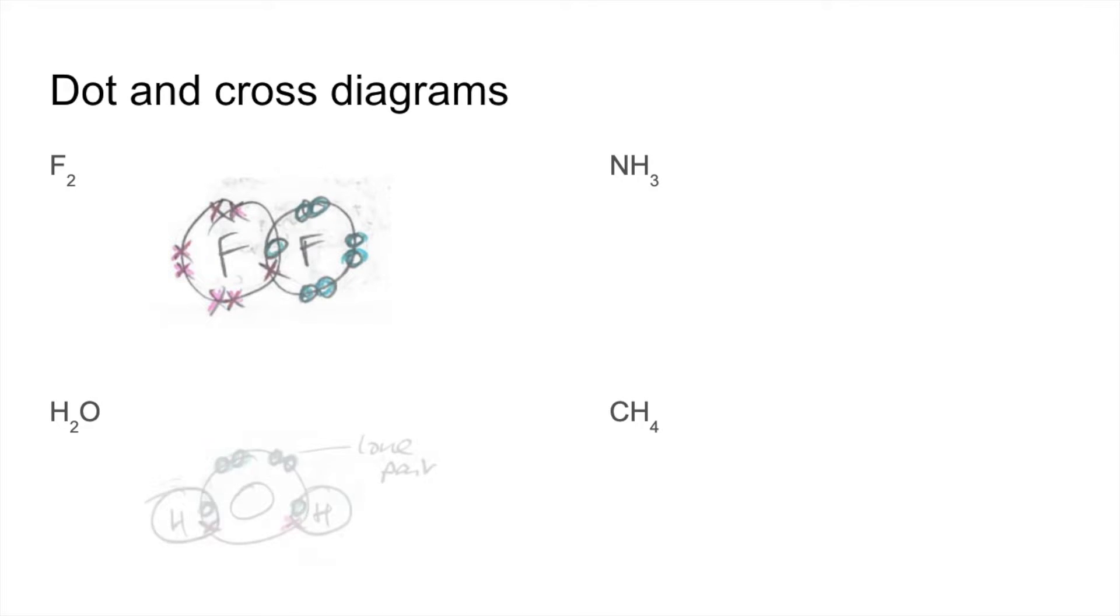Moving on to water. So there's its dot and cross diagram. You can see there are six oxygen electrons, the blue circles, and we've got single covalent bonds between the two hydrogens. These electron pairs here that aren't involved in bonding are called lone pairs.